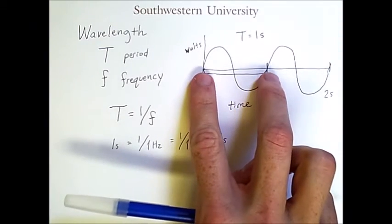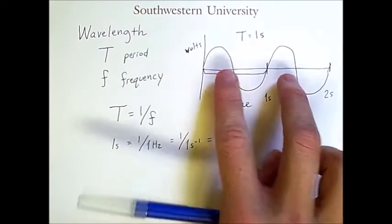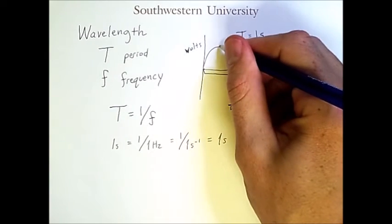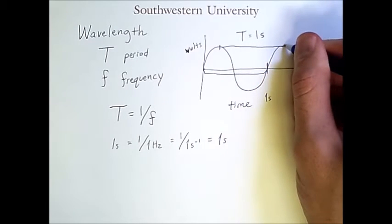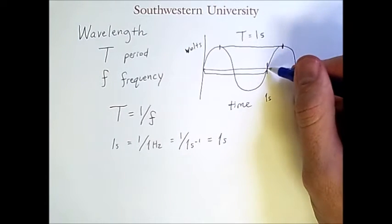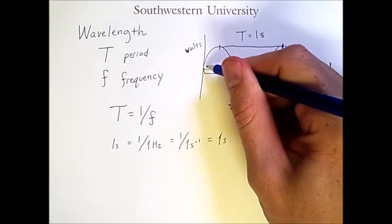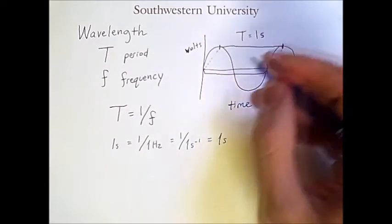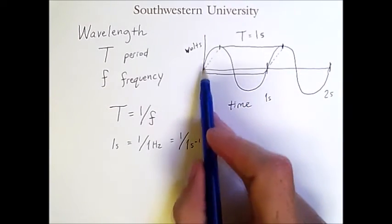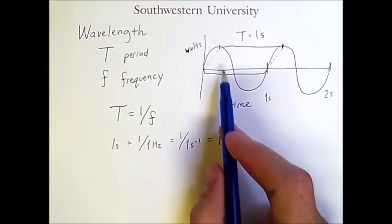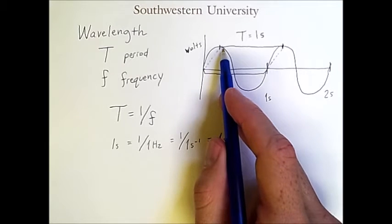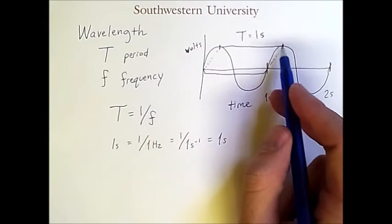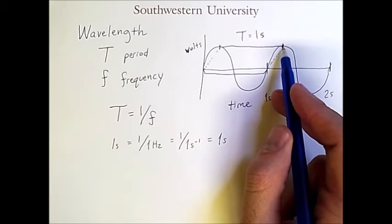Now because the period measures this interval here, I could actually shift this over and see that the distance between this peak and this peak has the exact same length. So I can pick any point on this wave,